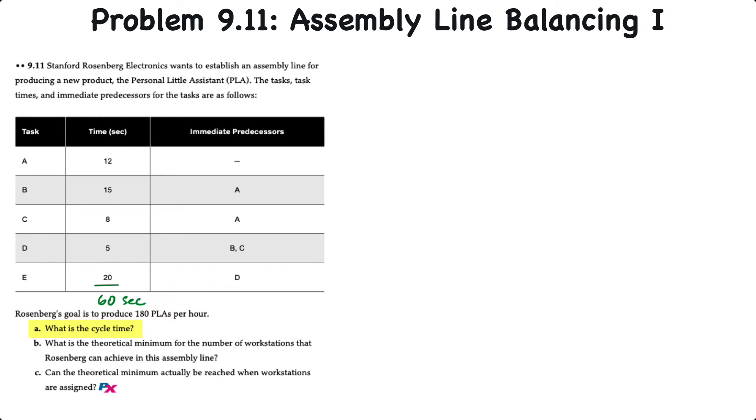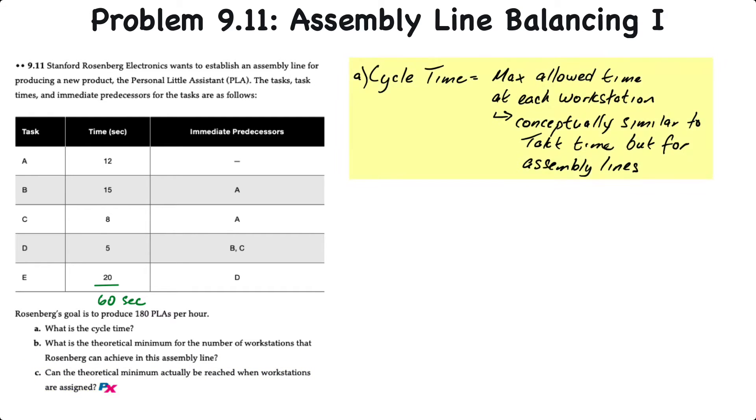We have three requirements here. The first is to determine the cycle time. The second, to determine the theoretical minimum number of workstations that Rosenberg can achieve in this assembly line. And third, to determine if we could actually achieve the minimum number of workstations after the line is balanced.